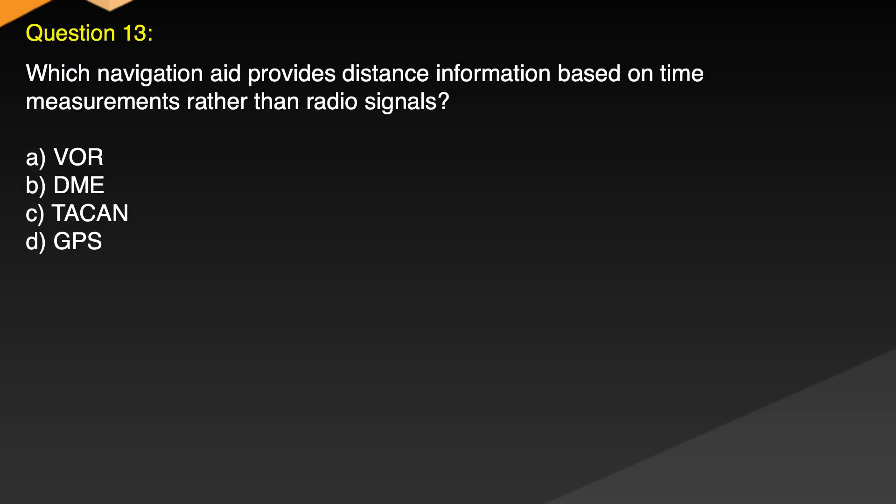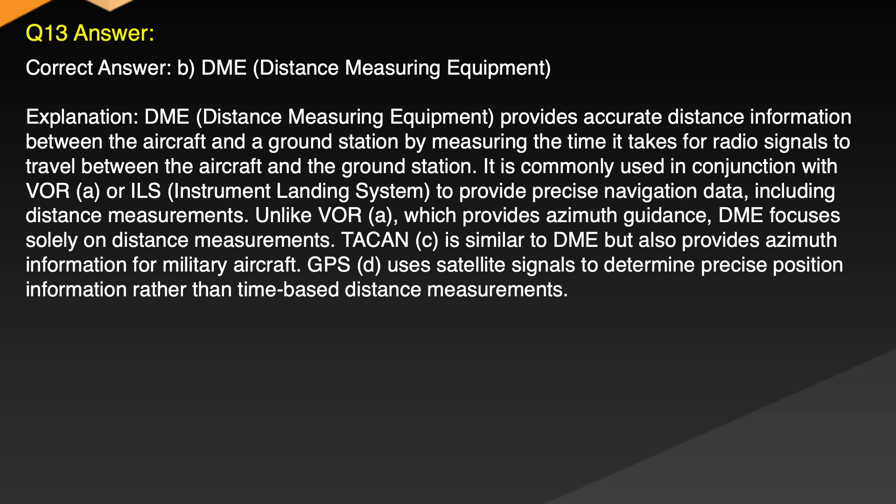Question 13. Which navigation aid provides distance information based on time measurements rather than radio signals? A. VOR. B. DME. C. TACAN. D. GPS. Correct answer: B. DME, Distance Measuring Equipment.